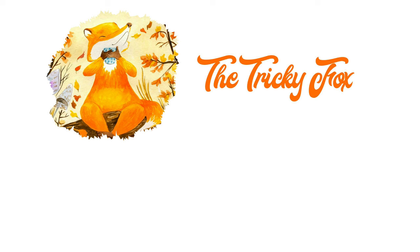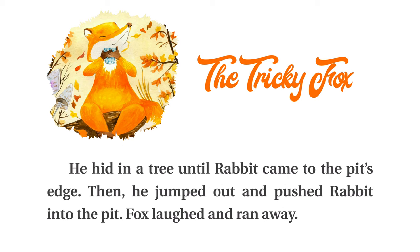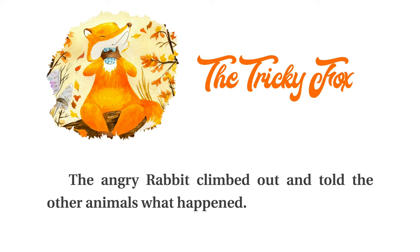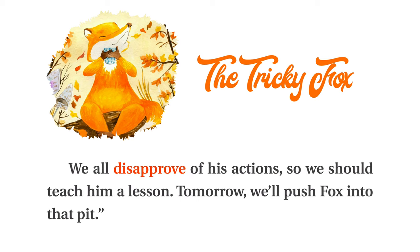The Tricky Fox. There was a fox that lived in the forest. Fox loved to play mean tricks on the other animals. One day, he used the sharp rim of a bottle to dig a pit in the ground. He hid in a tree until Rabbit came to the pit's edge. Then, he jumped out and pushed Rabbit into the pit. Fox laughed and ran away. The angry rabbit climbed out and told the other animals what happened. The others said, That is typical behavior for Fox. He does mean things all the time. Sometimes, he is completely immoral. We all disapprove of his actions, so we should teach him a lesson.